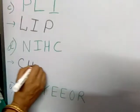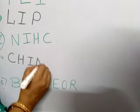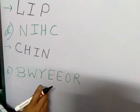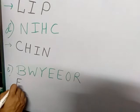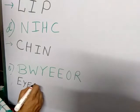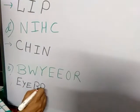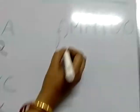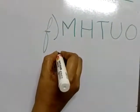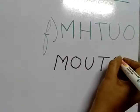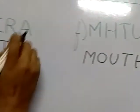Next is chin: C-H-I-N. Chin. And this is eyebrow: E-Y-E-B-R-O-W. Eyebrow. And last is mouth: M-O-U-T-H. Mouth.